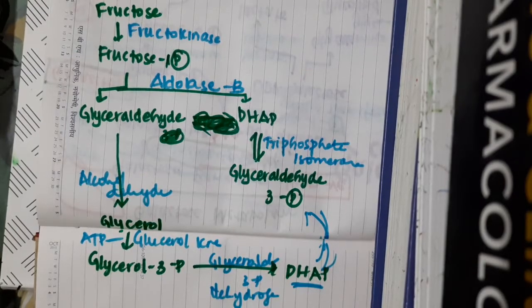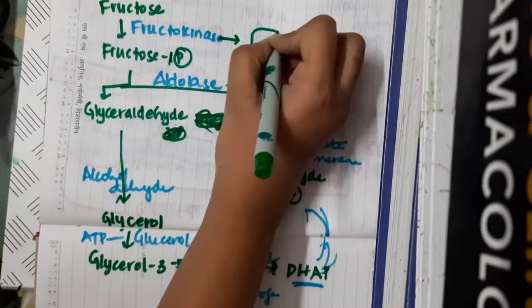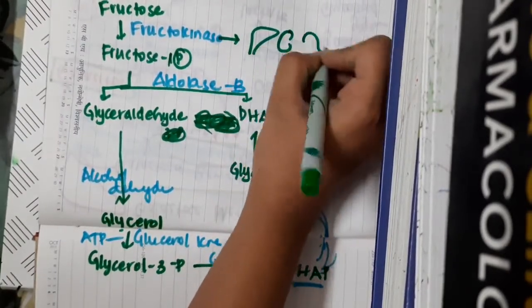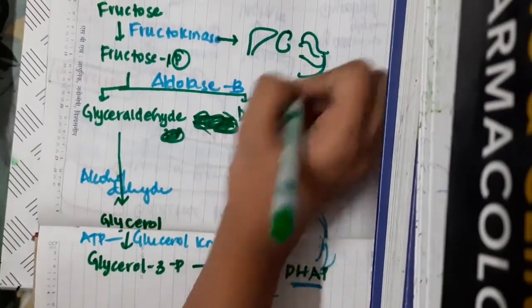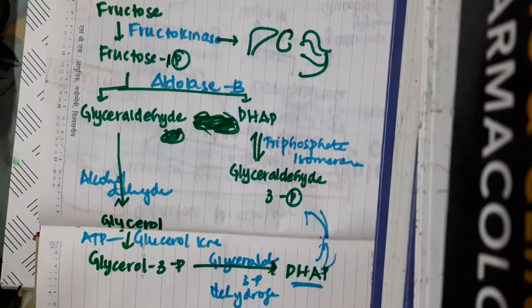The main important enzyme in fructose metabolism is fructokinase, which is present in the liver, kidney, and intestine, and is not affected by insulin.